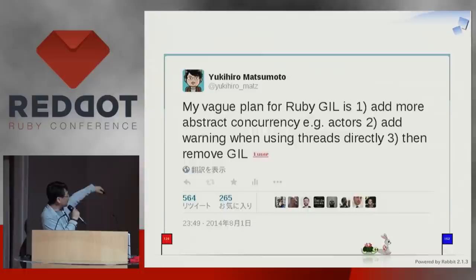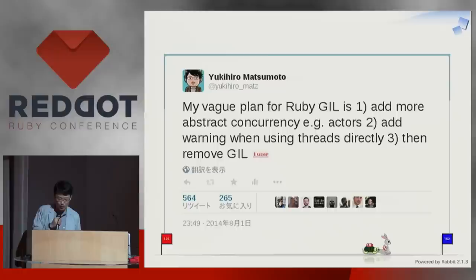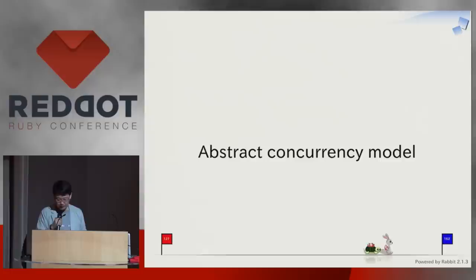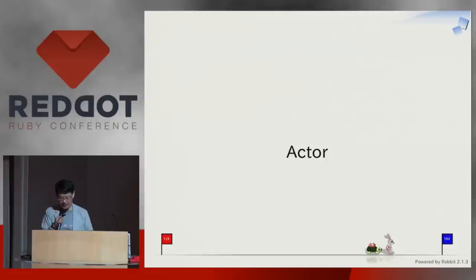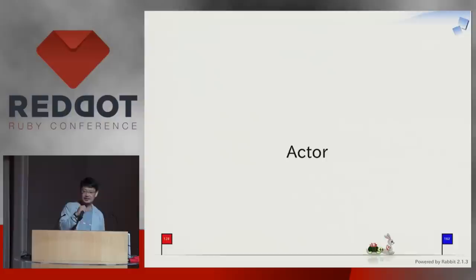This is my tweet from August 2014: my big plan for Ruby 3 is to add more abstract concurrency — for example, actors — add a warning when using threads directly, then remove the GIL. We want to move to a more abstract, higher-level concurrency model. The key question is: what is the abstract concurrency model for the future of Ruby, maybe Ruby 3.0? Maybe it's actors — actors are execution bodies kind of like threads, but actors do not share data. They only communicate via message passing, kind of like Go's goroutines and channels.